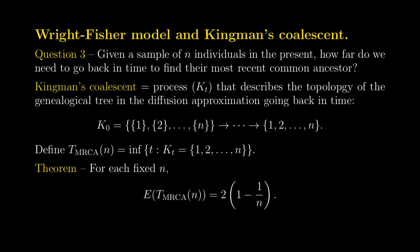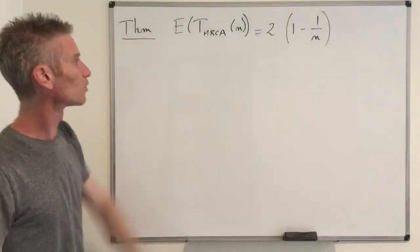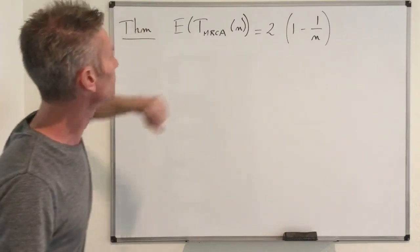Now that we've explained how Kingman's coalescence tracks the topology of the tree, we return to our original question: how far do we need to go back in time to find the most recent common ancestor? The time T_MRCA is defined rigorously as the infimum of times t such that K_t consists of only one set. The main result says the expected value of this time in the diffusion approximation equals 2(1 − 1/n).